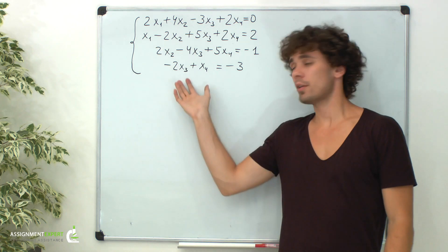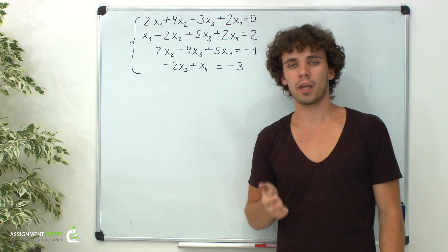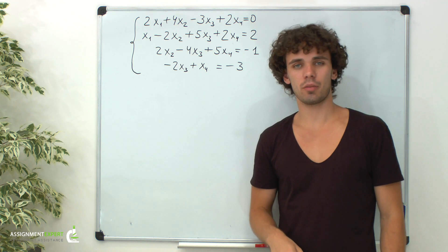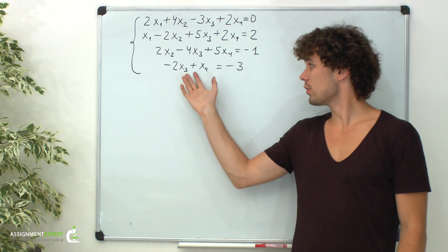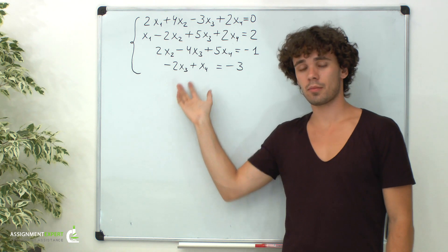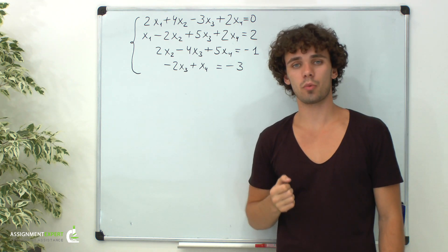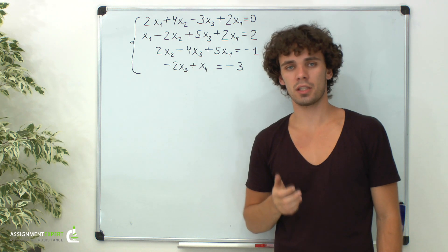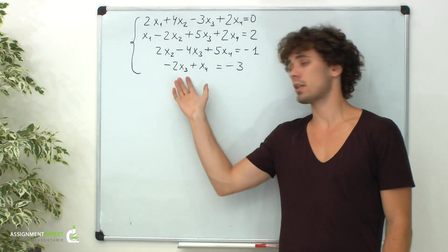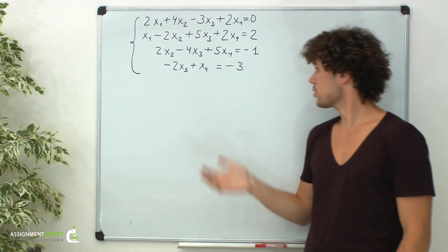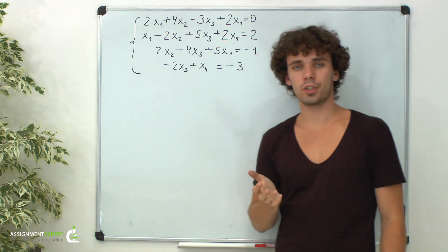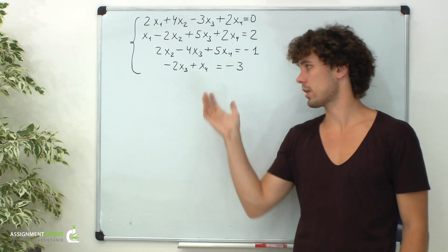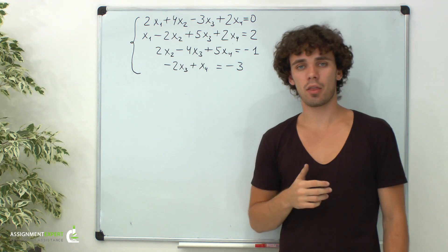Hello there! Here we have a system of linear equations, this time of the fourth order. Let's apply the Gaussian elimination method. It is often convenient to represent this system as its matrix, as a more compact way of representation. This is especially useful when dealing with systems of order higher than the third, as in our case. We can also notice that we have non-zero free terms, so we will perform all the operations with the augmented matrix. Let's write down this matrix.